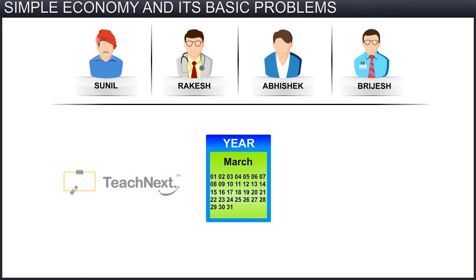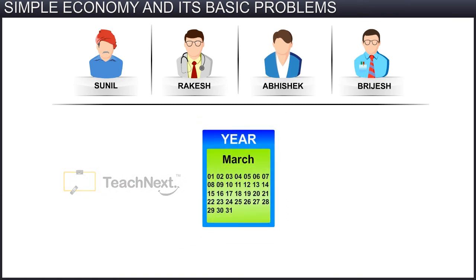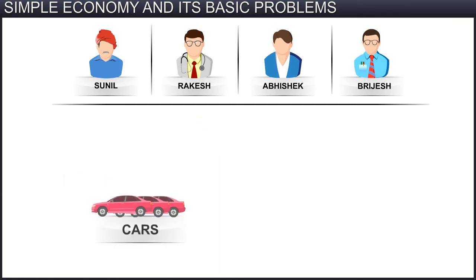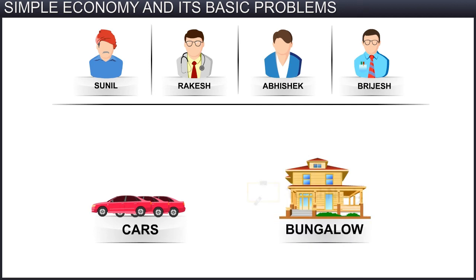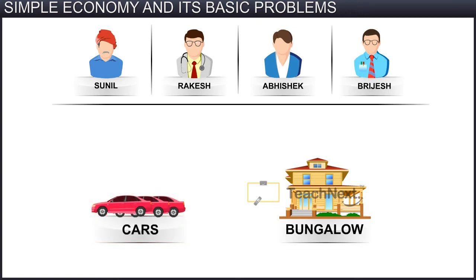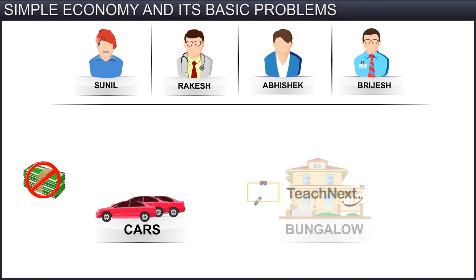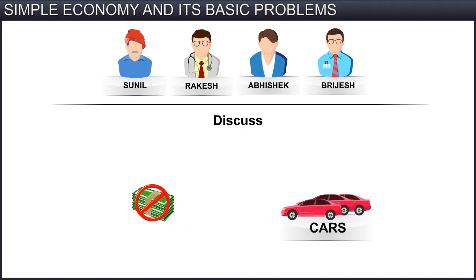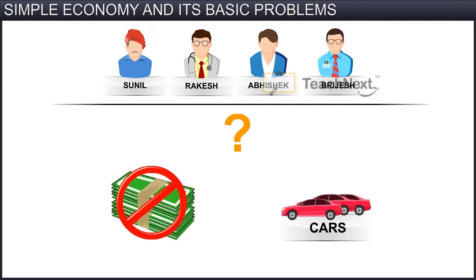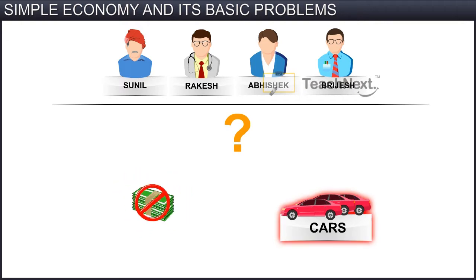At the end of the year, each of them decides to purchase a car and bungalow. First, they construct their houses. But when they go to purchase cars, they realise that they do not have sufficient money. They discuss between themselves the reason why they do not have sufficient money to purchase cars.